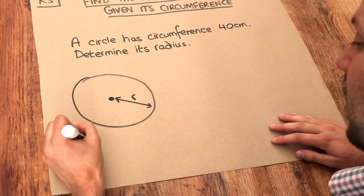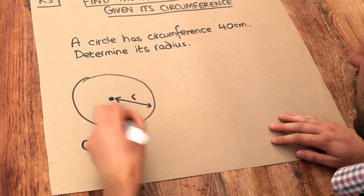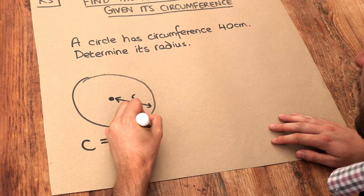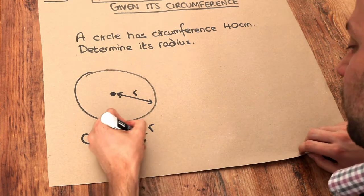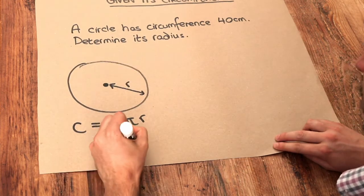Then the formula for the circumference was equal to 2πR. And that just means 2 multiplied by π, which is a special mathematical constant, π, the Greek letter.